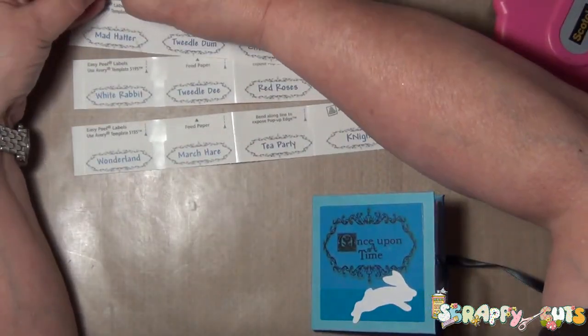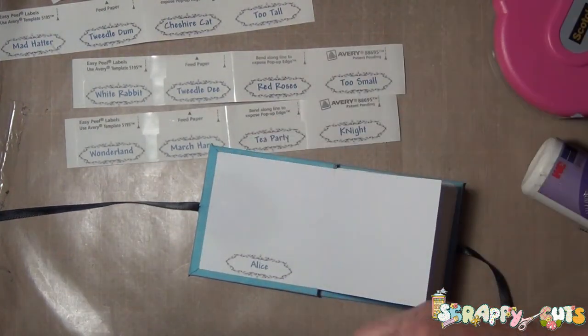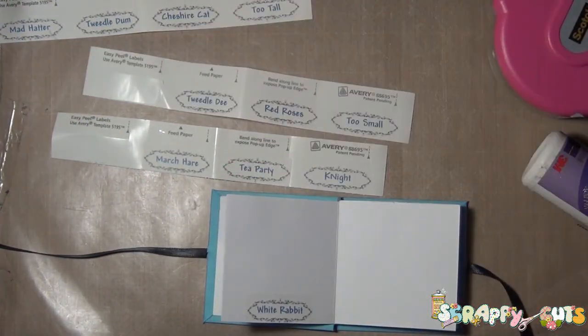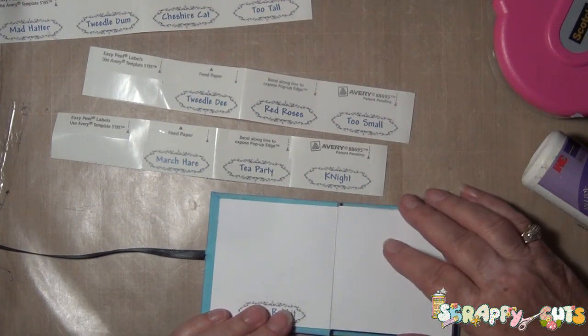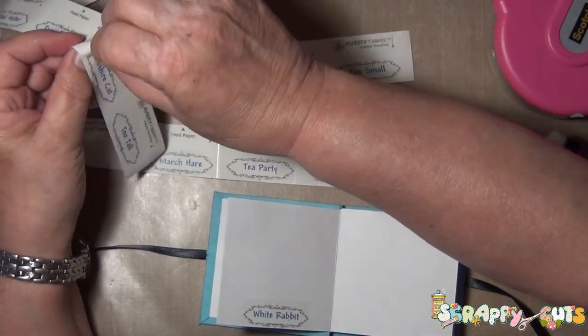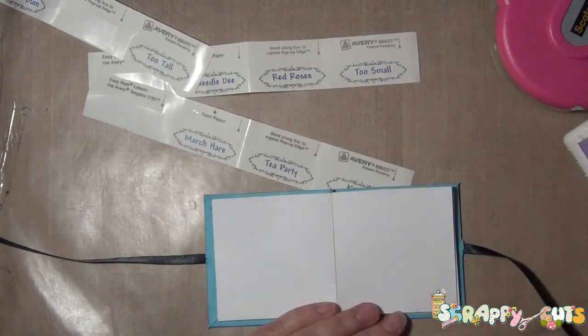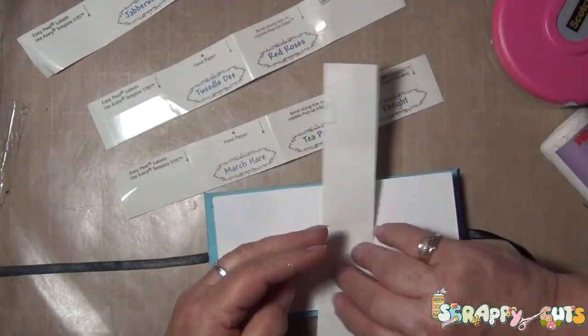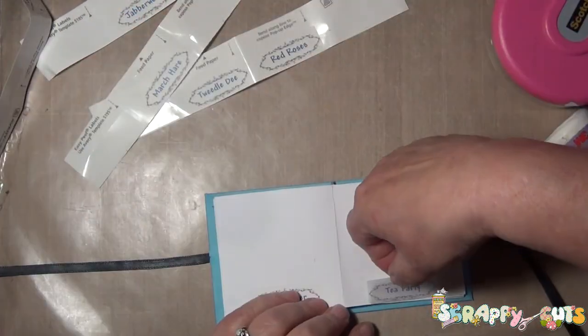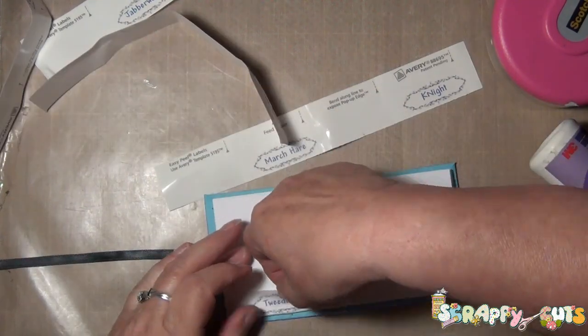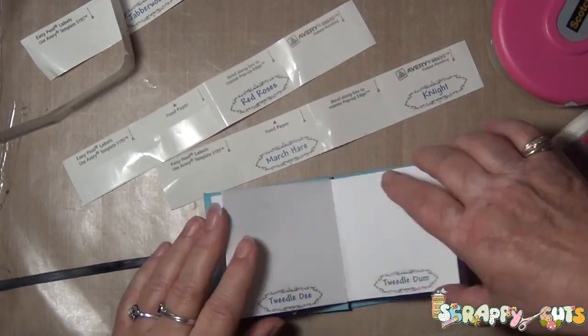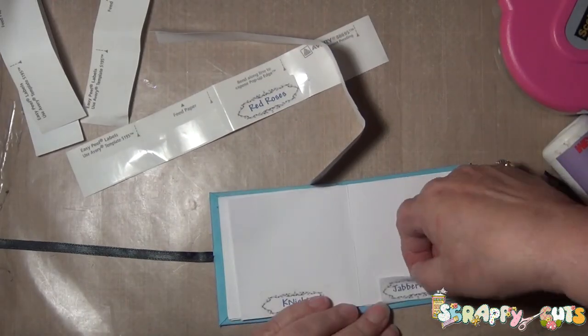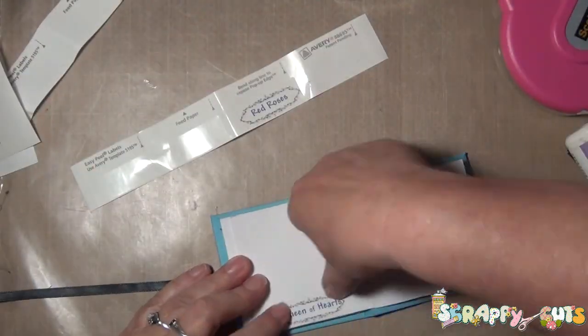And then on each page, since this book has to do with Alice in Wonderland, I printed up words and characters on Avery stickers. And these were the ones that are the return address stickers. And each page will have something on it. You could wait to add your pictures before you put the stickers on. That way the stickers are kind of overlapping your picture. If not, you want to give it away as a gift and let your receiver add their pictures. And you can just add them like I did. So we have Alice in Wonderland, White Rabbit, Cheshire Cat, Too Tall, Too Small, Tweedledee, Tweedledum, and on and on. Oh, the March Hare, the Tea Party, the Knight, the Jabberwocky. And so there's twelve different characters that have to do with Alice in Wonderland.